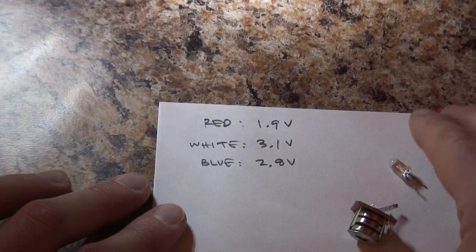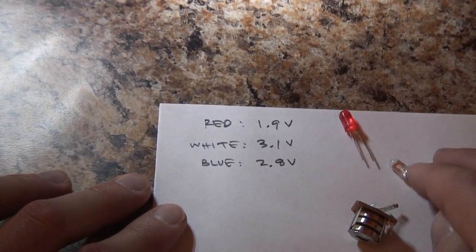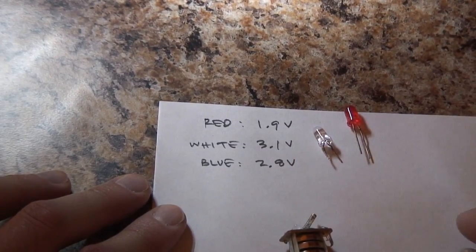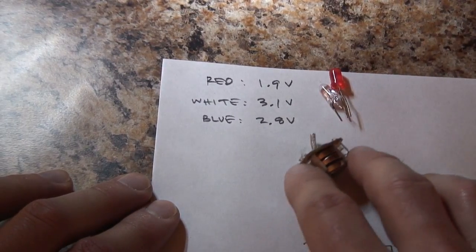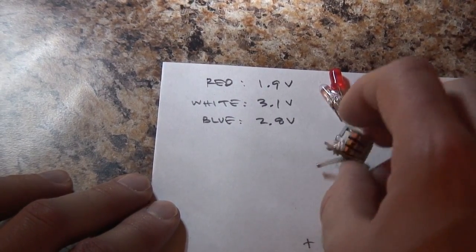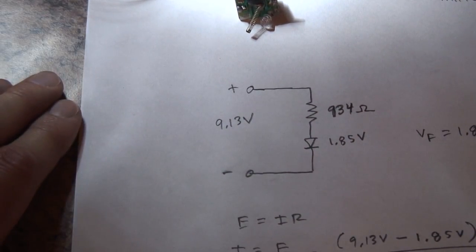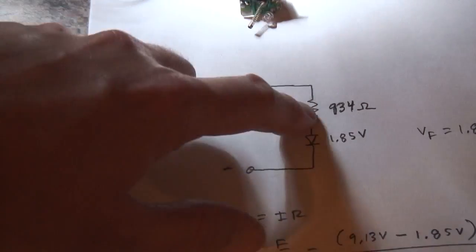So here are the results of our tests. The red LED had the smallest forward voltage at 1.9 volts. The white LED had the highest forward voltage at 3.1 volts. And the blue LED was slightly less than the white one, at 2.8 volts. The only electrical components we need to measure the forward voltage is a battery and a resistor.